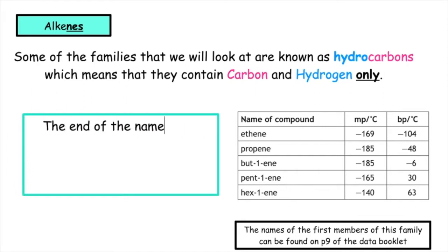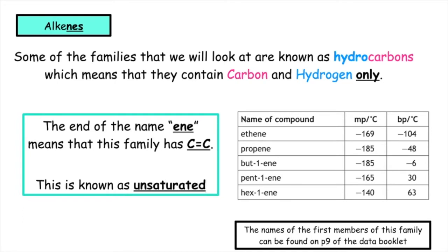The end of the name 'ene' tells us that this family has carbon to carbon double bonds. This is known as unsaturated. The general formula for the alkenes is CnH2n.